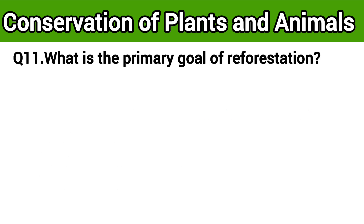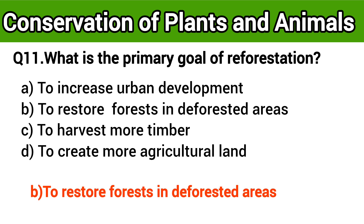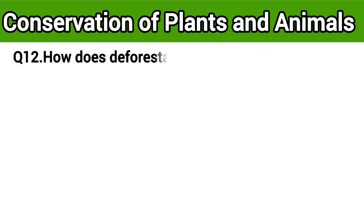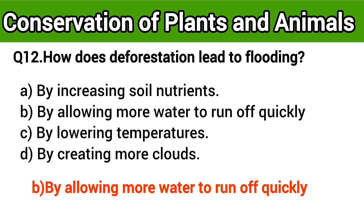Question number 11: What is the primary goal of reforestation? The right answer is option B: to restore forests in deforested areas. Question number 12: How does deforestation lead to flooding? The right answer is option B: by allowing more water to run off quickly.